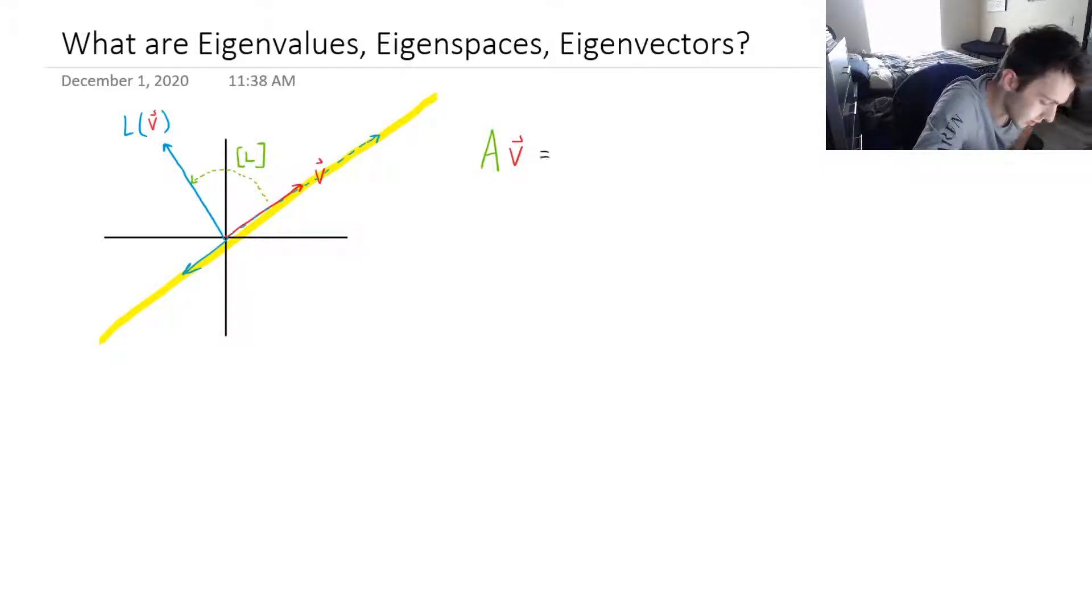And this is equal to some constant, which is called lambda, multiplied by the vector v. So what this is saying is that we are taking a vector v right there. We are applying a linear transformation A to it. And the result is just going to be the same vector v multiplied by some constant lambda.